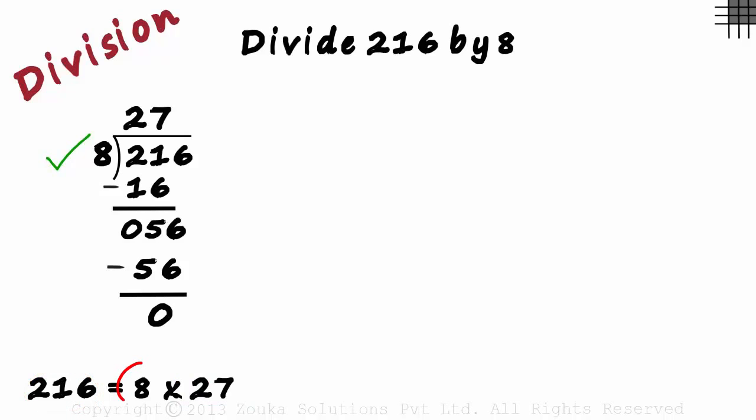Remember, 8 and 27 are two of the many factors of 216. This division just helps us to know if 8 is a factor of 216 or not. And if we find out that the divisor is a factor, then the quotient as well has to be a factor.